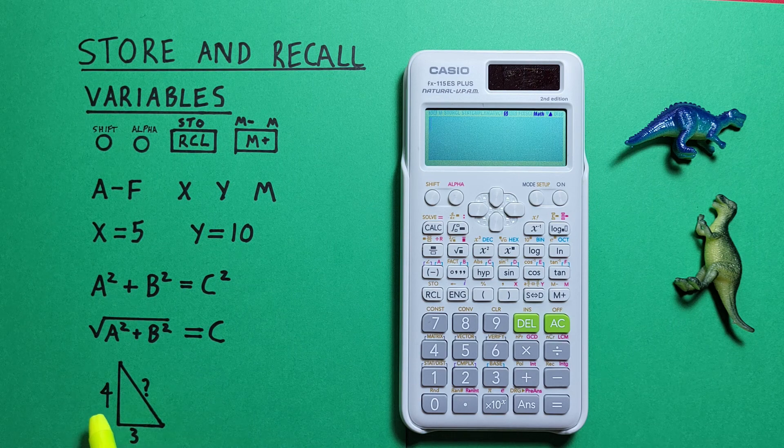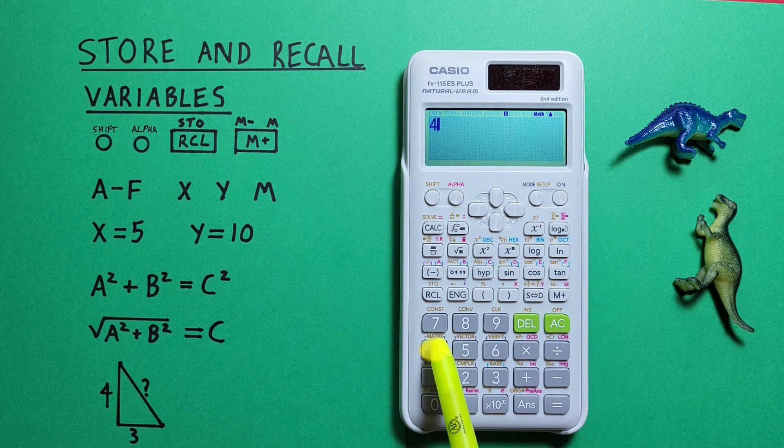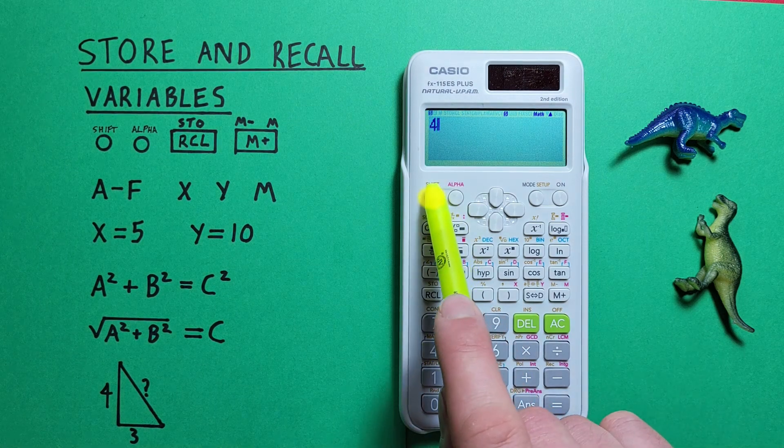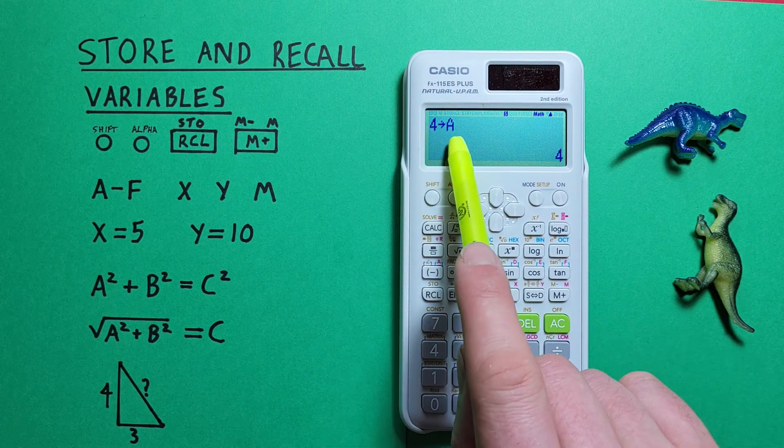Well, let's store 4 as a. So we press 4, shift, store as our a. There we go, 4 into a.